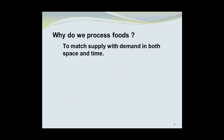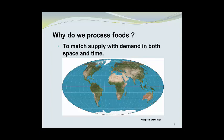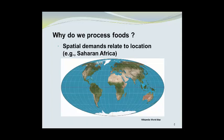So just why do we process foods? One of the reasons is to match the supply with the demand in both space and time. Here we see a map of the world that will be the basis for our discussion. Spatial demands relate to location. For example, there may be a demand for food in the Sahara Desert area due to famine, while there could be a source of food in North America, and getting it there is a spatially related problem. Processing food can help us meet these demands.